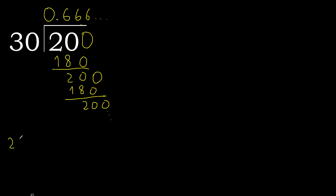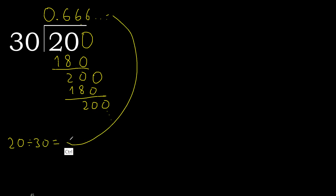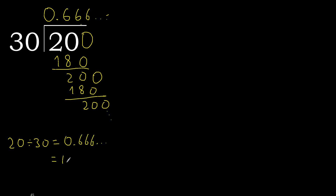20 divided by 30 equals 0.6 repeating — or after the point, 6 repeats. Therefore, like this: the answer is 0.666... (6 repeating).